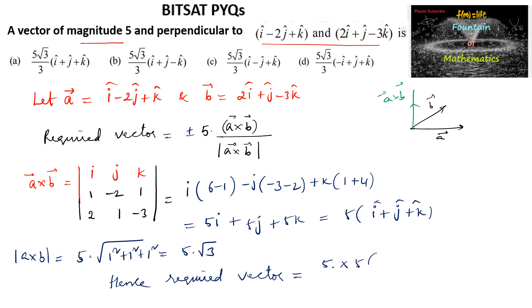That is 5 times i plus j plus k divided by 5 into root 3. Or multiply and divide with root 3, we get 5 root 3 upon 3 times i plus j plus k.